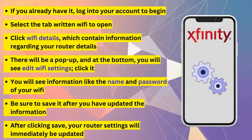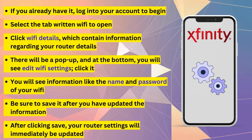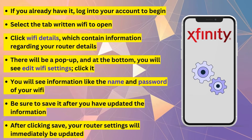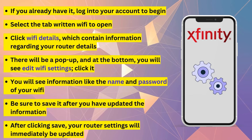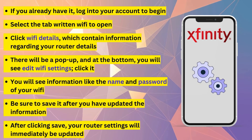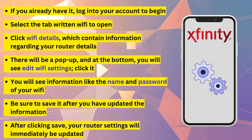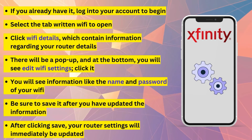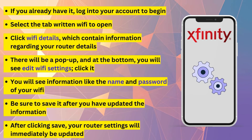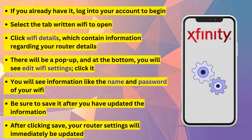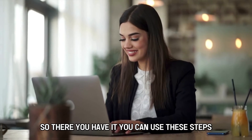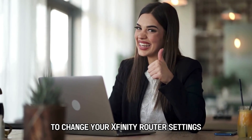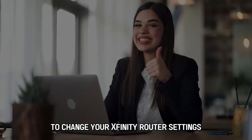There will be a pop-up, and at the bottom, you'll see Edit Wi-Fi settings. Click it. You'll see information like the name and password of your Wi-Fi. Be sure to save it after you've updated the information. After clicking Save, your router settings will immediately be updated. So, there you have it — you can use these steps to change your Xfinity router settings.